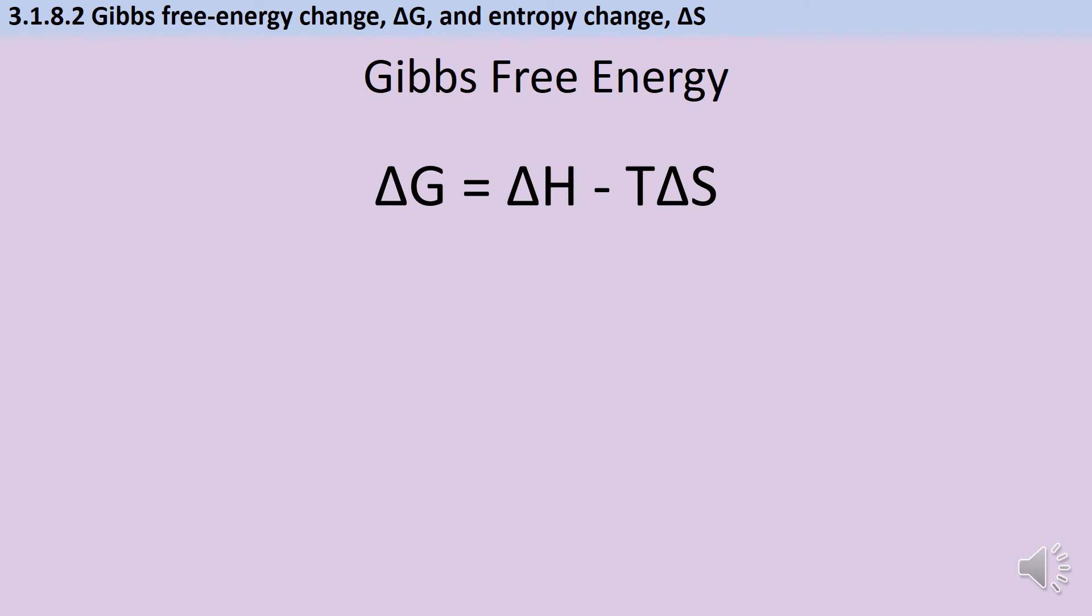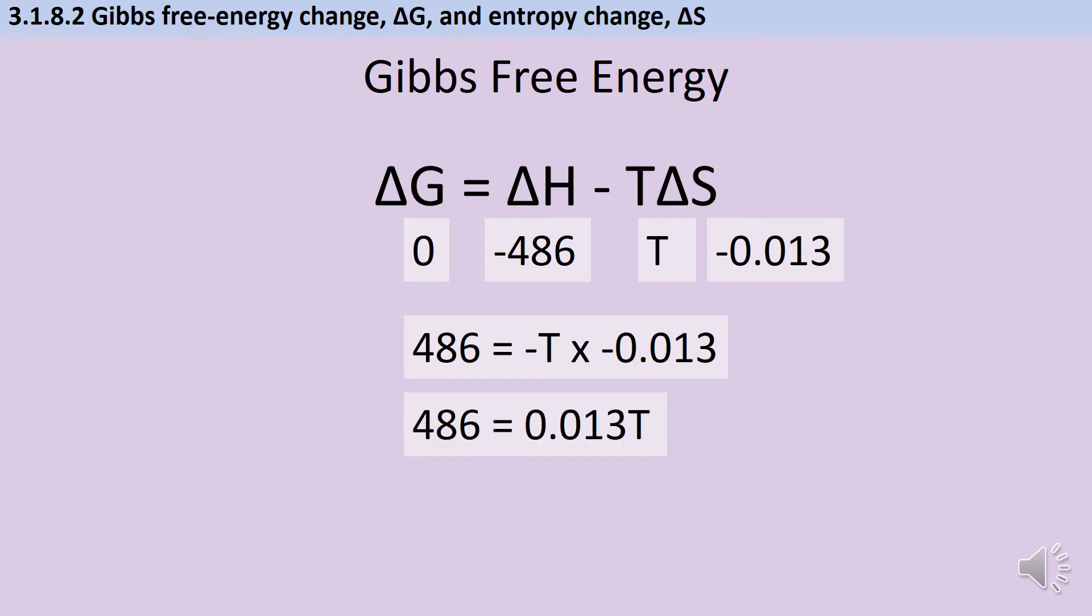Let's say I now wanted to use this same data to work out what temperature this reaction becomes feasible at. I already know that the value for ΔH is minus 486 and the value for ΔS is minus 0.013. The reaction will become feasible at the point where ΔG is zero, so I'm looking for a value of T, the temperature that will cause ΔH and TΔS to be exactly the same size as one another. So that tells me therefore that I need 486 to be equal to minus T times minus 0.013, or in other words 486 has to be 0.013 T. So if I divide 486 by 0.013, I get a value for T and it's the massive value 37,384 degrees Kelvin. So that is the temperature at which this reaction will stop being feasible.